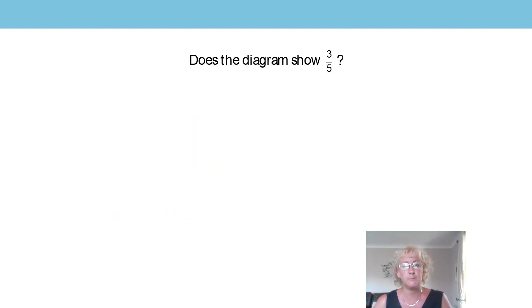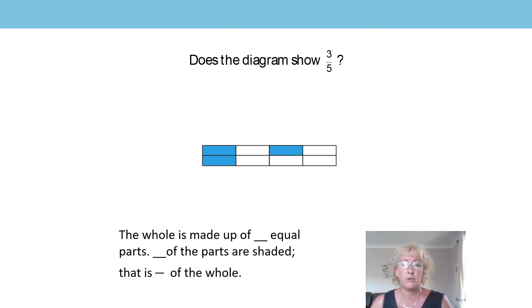Let's have a look at another one together now. What about this one? So again, remember to think about how many equal parts there are altogether and how many are shaded. So does it show three fifths? The whole is made up of eight equal parts so it doesn't show five equal parts. And three of those are shaded so that would be three eighths altogether so that would be incorrect.